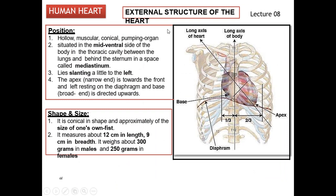First of all, position. The human heart is a hollow muscular conical pumping organ. It is situated in the mid-ventral side of the body — in the thoracic cavity, behind the sternum. This bone is called the sternum. It lies in the space called the mediastinum.